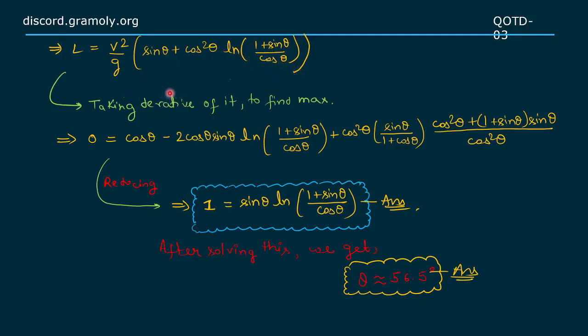Now we have to take the derivative of it to find the maximum. We get 0 equals this expression. When we reduce and simplify to solve, we get 1 equals sin θ times log of (1 plus sin θ upon cos θ), which is the final expression as our first answer.